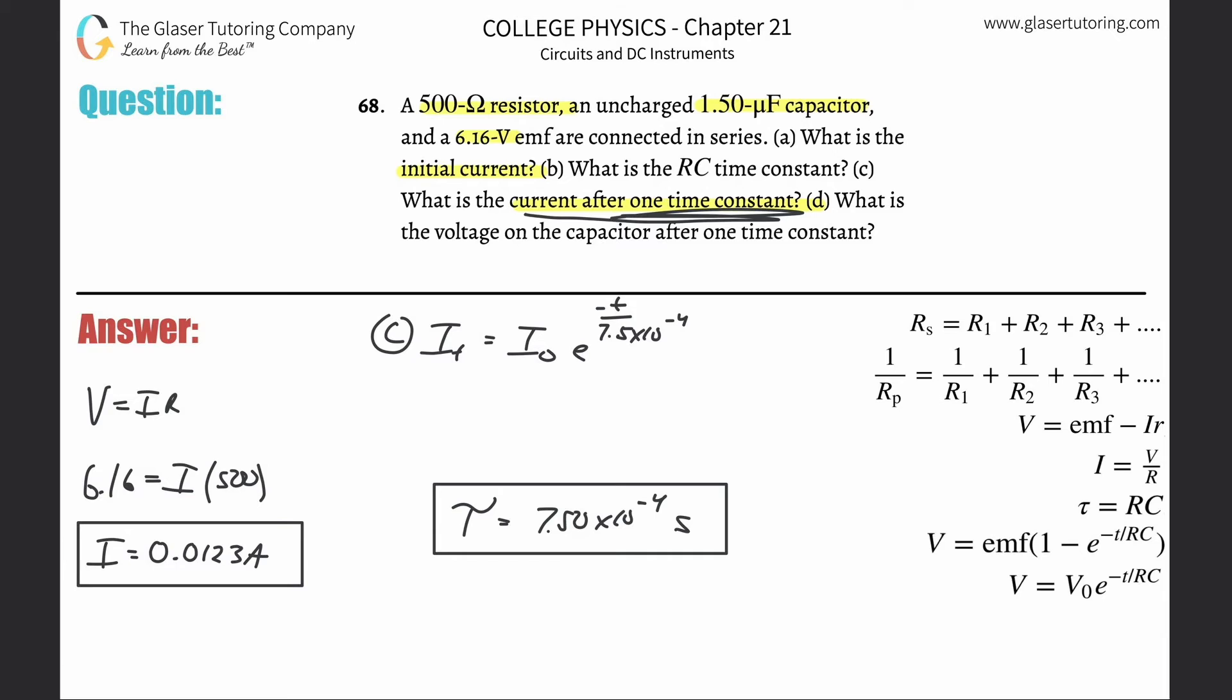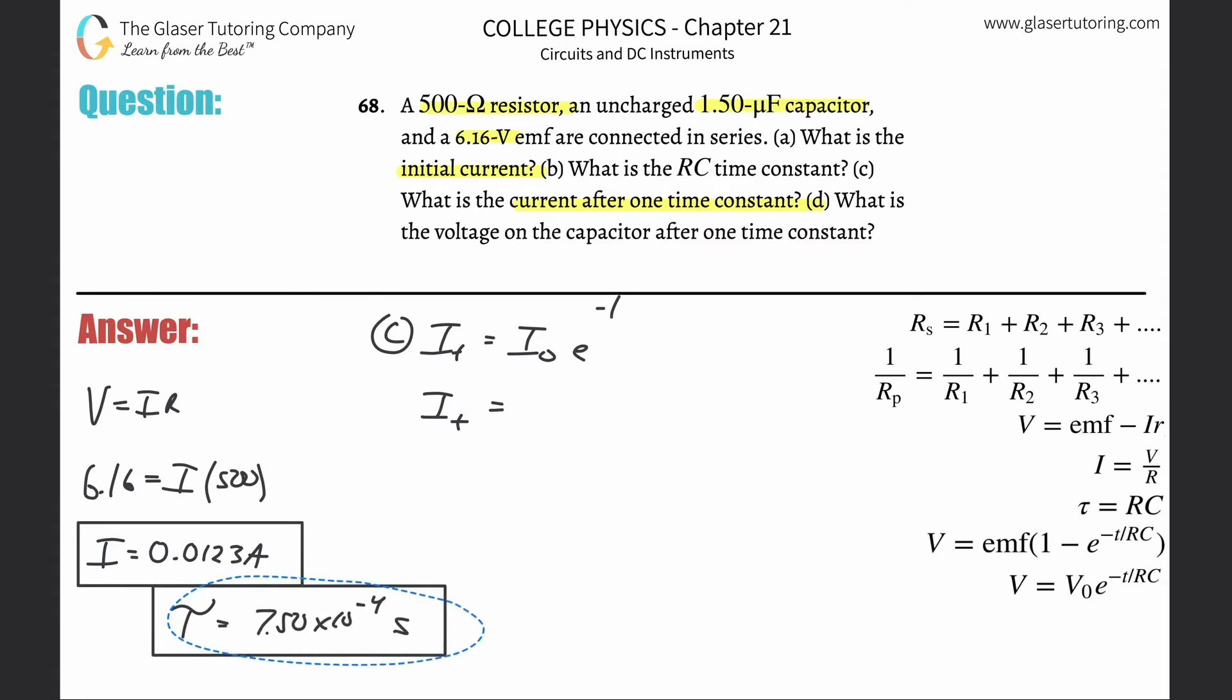So wait a minute, what's the elapsed time? Well, it's one time constant, so it's the same. So I would just plug in 7.5 times 10 to the minus 4th up there. And then mathematically, this would just work out to be negative 1. Look at how nice that is. So this is now just going to be equal to the initial current, 0.0123, multiplied by E to the negative 1. That's it.